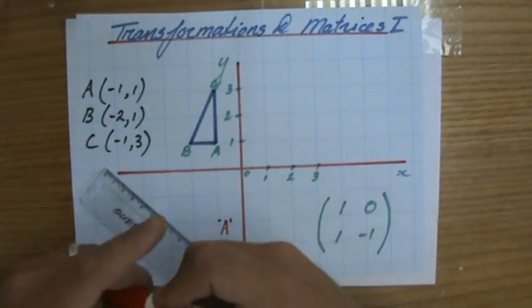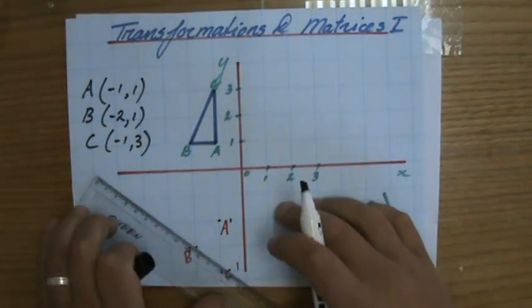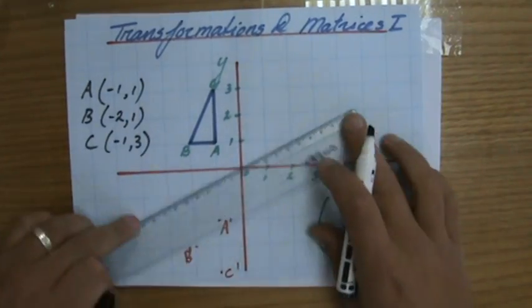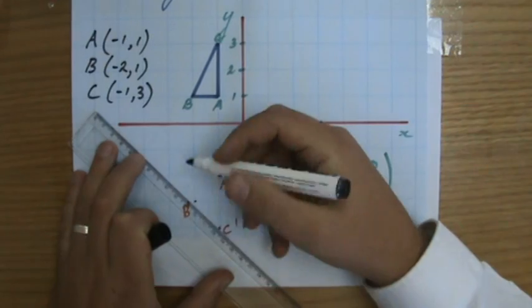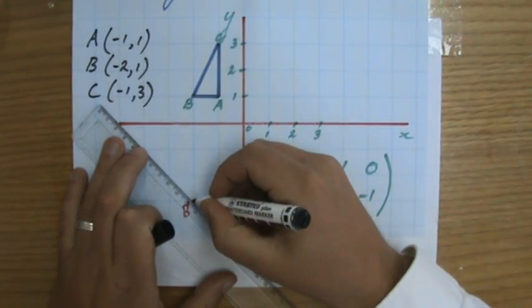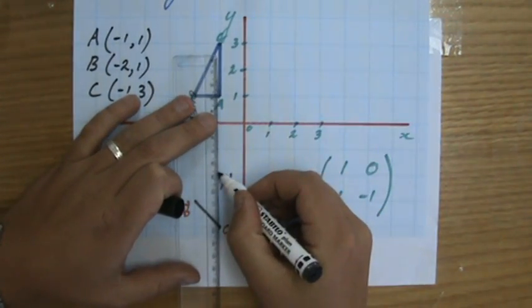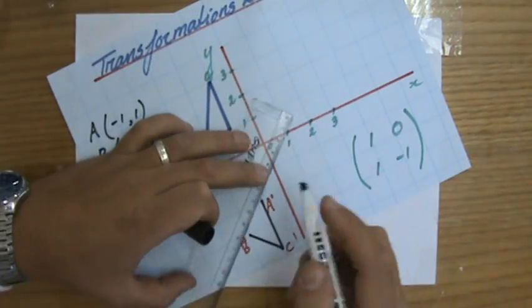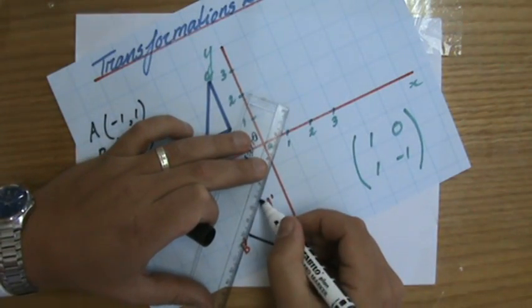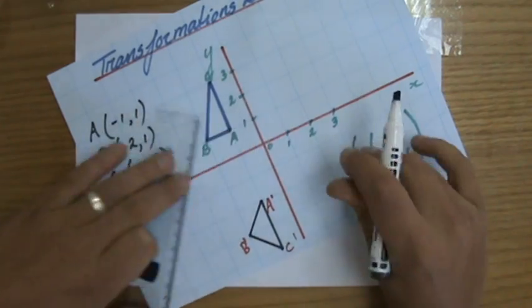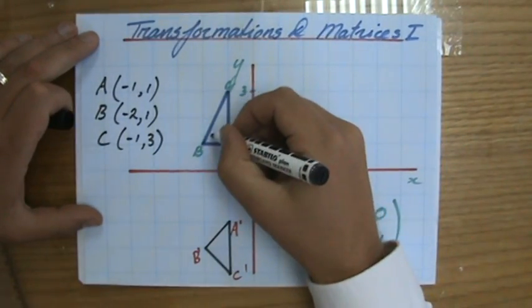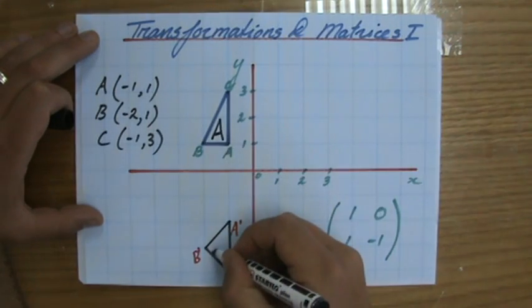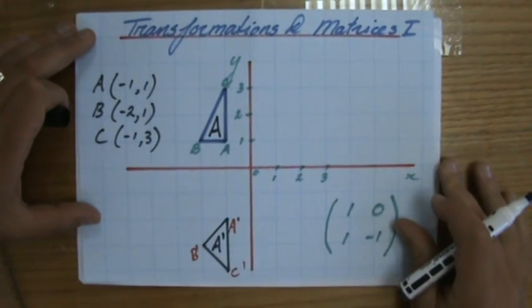And then I connect the dots. That is my new triangle. Make sure you use a sharp pencil, please, and the ruler of course. You want to take some pride in your work. So if that would be triangle A, then this would be triangle A apostrophe, its image.